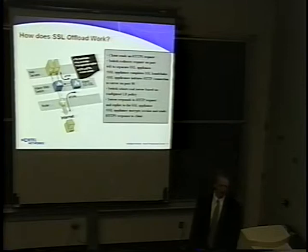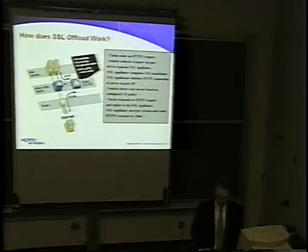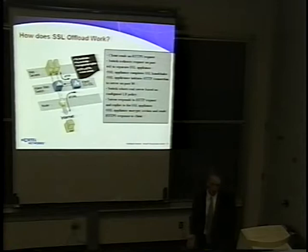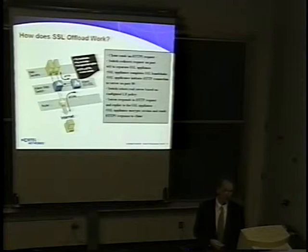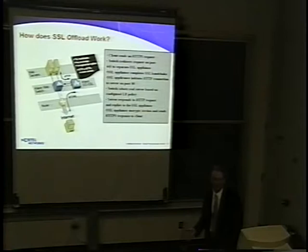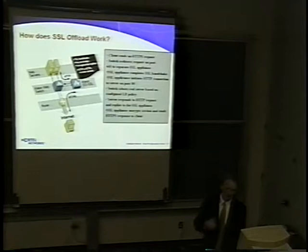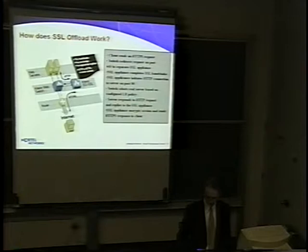Here's a walkthrough of an SSL offload accelerator setup. An internet client sends an HTTPS request; the web switch intercepts it and redirects the request on port 443 to the SSL offload appliance. The SSL appliance completes the SSL handshake with the web server, then initiates an HTTP connection back to the switch on port 80. The web switch then selects the real server based on configured load balancing policies. The server responds via HTTP to the SSL appliance, which then encrypts the session and sends the HTTPS response to the client through the spliced TCP connection via the web switch.